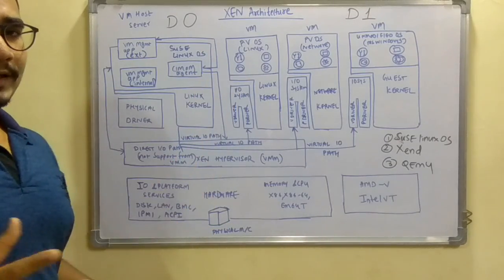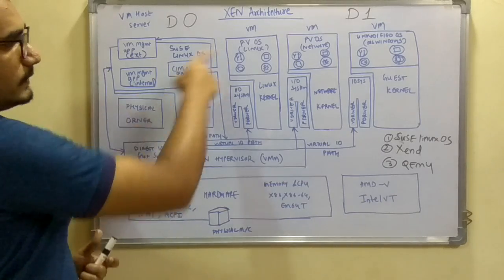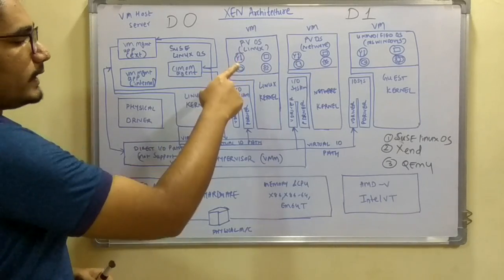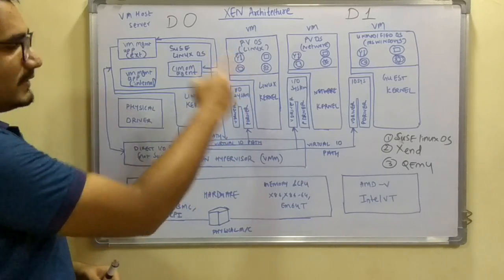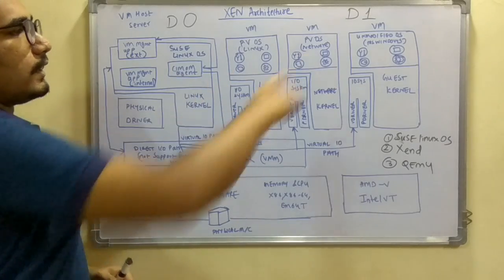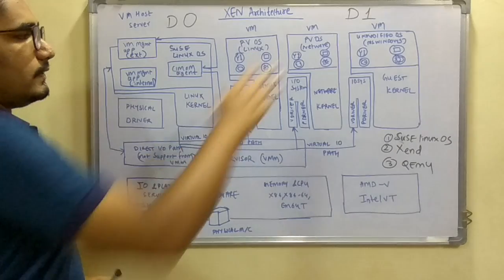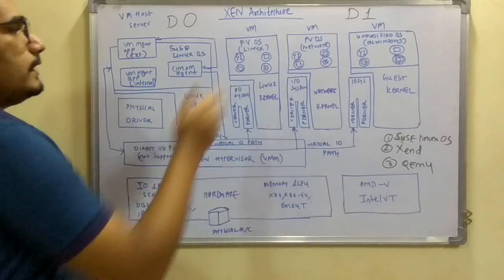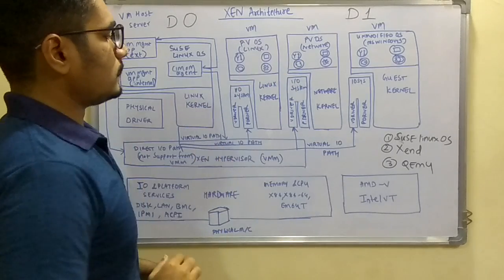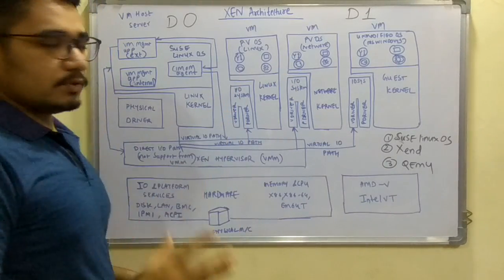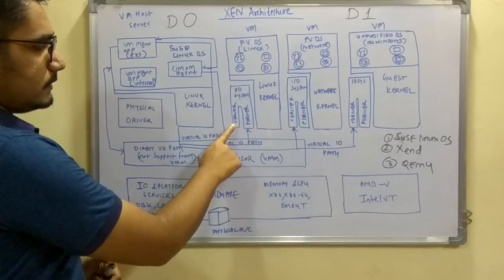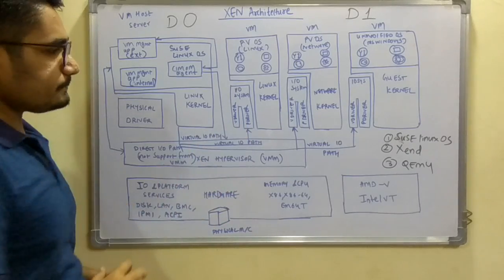These are individual virtual machines which are hosted and each of them has four different components or tasks. First is maintenance, then storage, then this gear is for settings, and this is for connectivity. Each of the VMs does the same activities. Then you have the Linux kernel for this, network kernel for this, and at the I/O system you have the virtual driver as well as the physical driver.